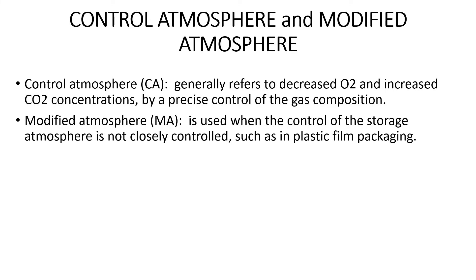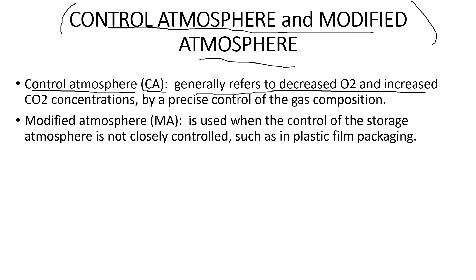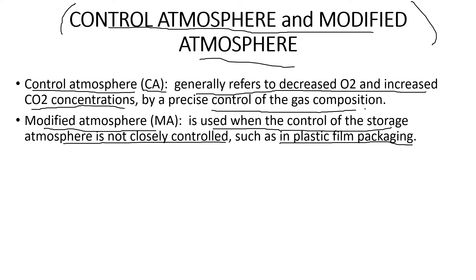Controlled atmosphere generally refers to the decreased oxygen and increased carbon dioxide concentration with precise control of gas composition. Modified atmosphere is used when the control of the storage atmosphere is not closely controlled, such as in plastic film packaging. These are the two major packaging systems: the controlled system reduces oxygen in the food item and increases carbon dioxide content, while modified atmosphere monitors the composition of different gases.